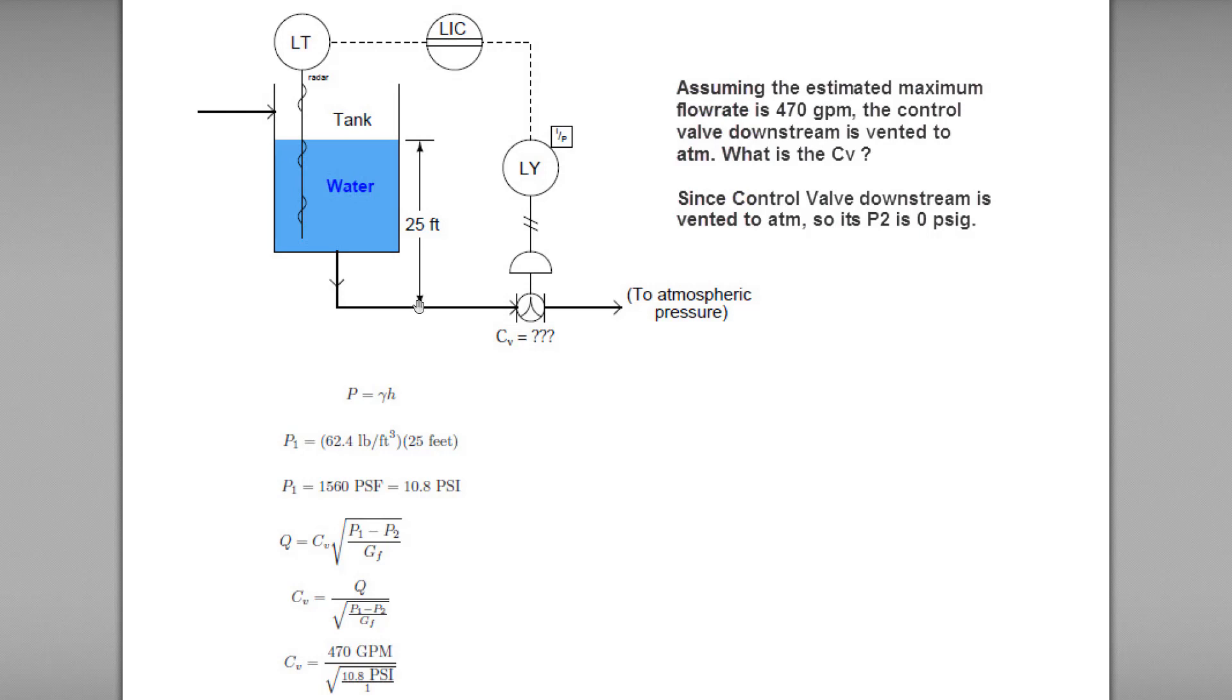Height is this one, 25 feet. So the upstream pressure will be 1560 pounds square feet. You can again use Google to convert PSF pounds square feet to PSI. So you will get about 10.8 PSI.